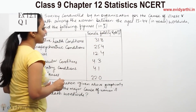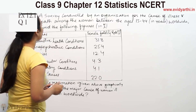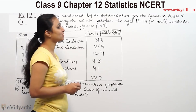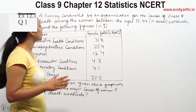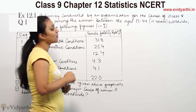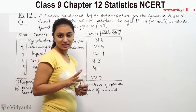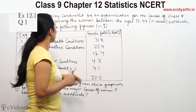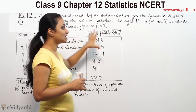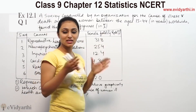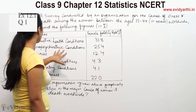This is a survey conducted by Ngana, an organization for the cause of illness and death among women between the ages 15 to 44 years worldwide. The survey covers women's conditions in the 15 to 44 age group — which illness is the cause, and what the percentage of cases is.